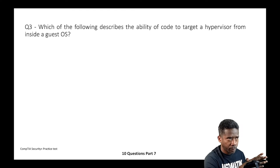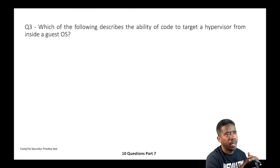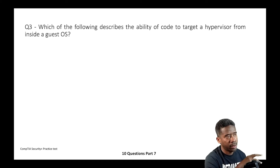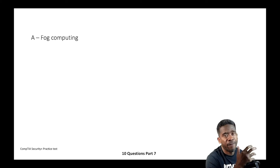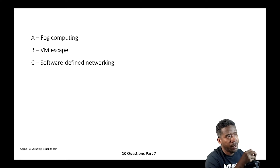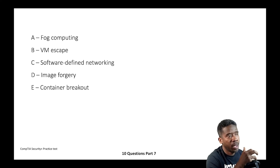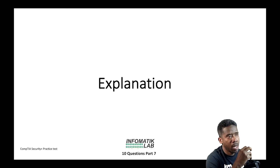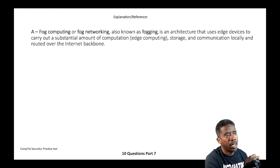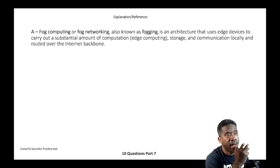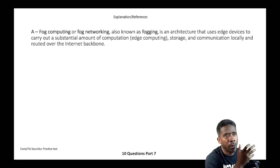Question three: Which of the following describes the ability of code to target a hypervisor from inside a guest OS? The choices are: A) Fog computing, B) VM escape, C) Software defined networking (SDN), D) Image forgery, or E) Container breakout.